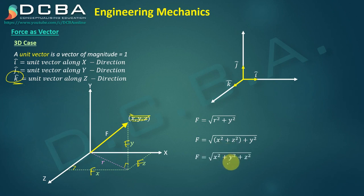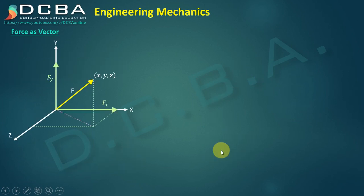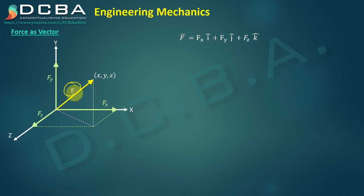The meaning of this is: if I know the X, Y, and Z components of an entity inclined in space, I can always find the magnitude of that entity. In this case it is a force, where FX, FY, and FZ are the components.